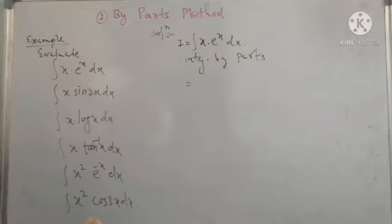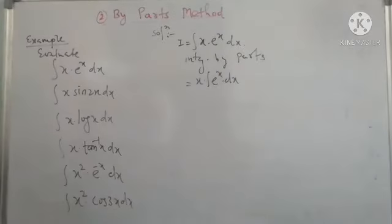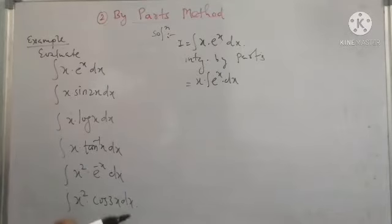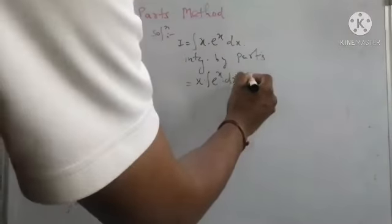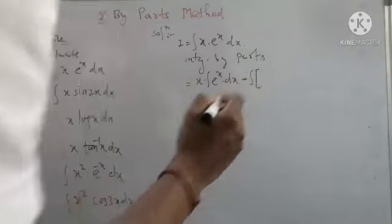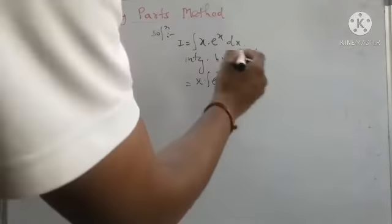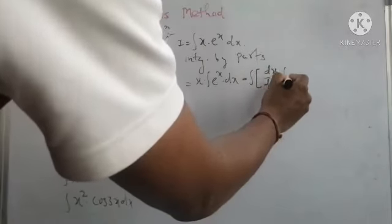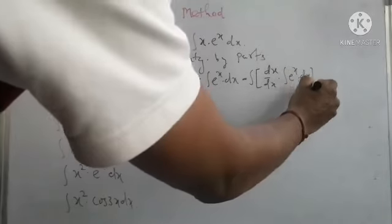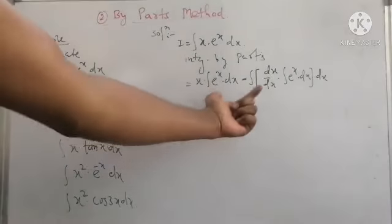In the first part, we take the first term x outside the integration and integrate the second term eˣ dx. Then, minus the integration of the bracket — in the second part, we take the derivative of the first term x with respect to x, multiplied by the integration of the second term eˣ dx, and this bracket is again integrated with respect to x.